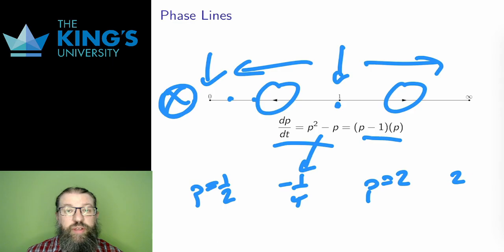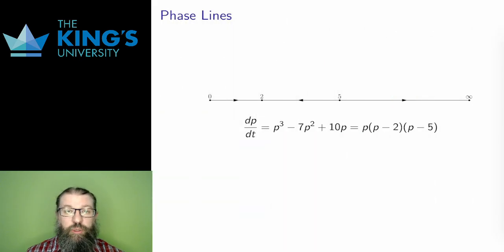Please note that the points on the phase line are all starting values of the population. This is a number line for P, not for the time T, and time is not shown on the phase line. The phase line just tells us what will happen for certain starting values of the population.